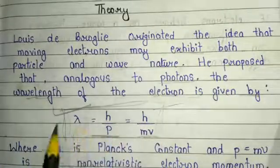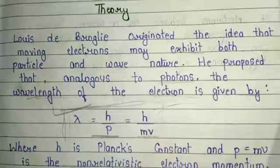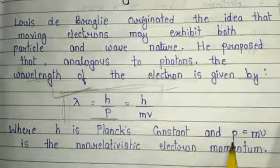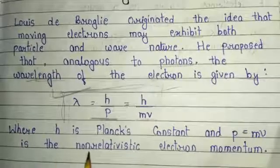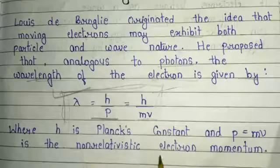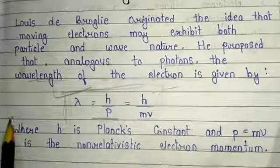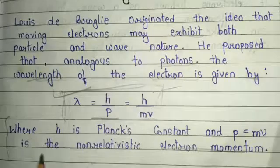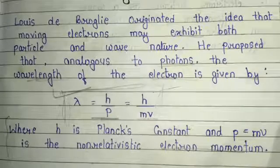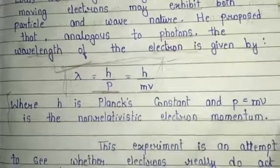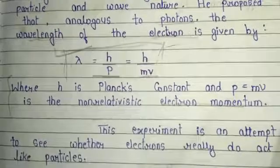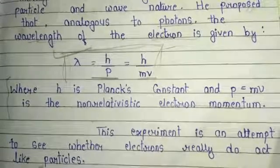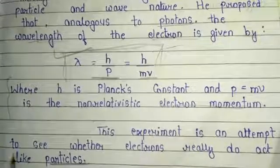This formula is given by Louis de Broglie and it is a very important formula for electron diffraction. Here h is Planck's constant and p = mv is the non-relativistic electron momentum. This experiment is an attempt to see whether electrons really do act like particles.